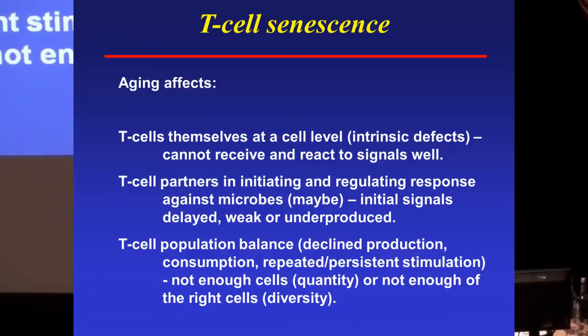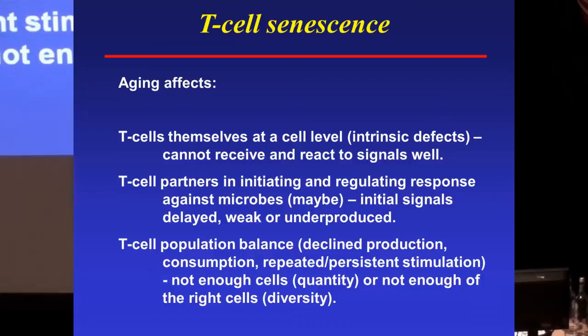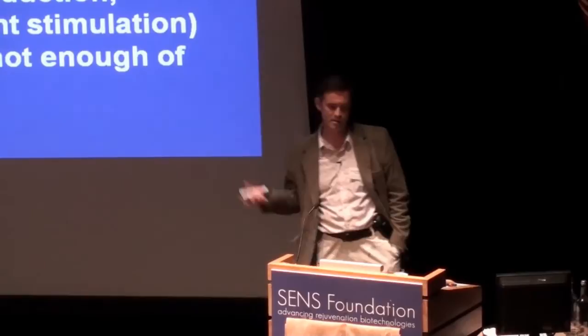Finally, the particular issue with T cells — a very dynamic tissue that recirculates throughout the body — is population balance. The problems in old age have to do with the decline in production of new T cells, increased consumption throughout the lifespan, and repeated and persistent stimulation. All of that can result in not having enough cells quantitatively, or not having enough of the right cells, which is the problem with diversity. We will be talking quite a bit today about this latter issue.